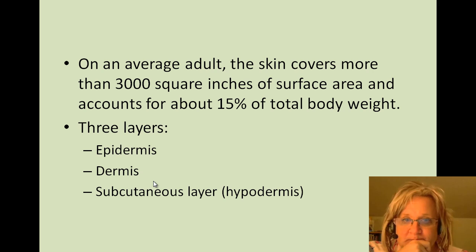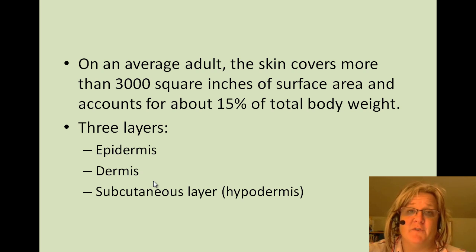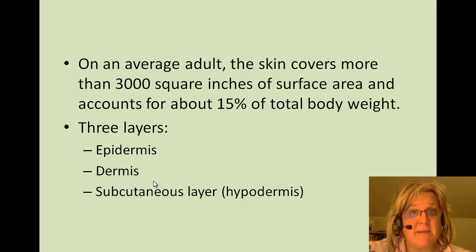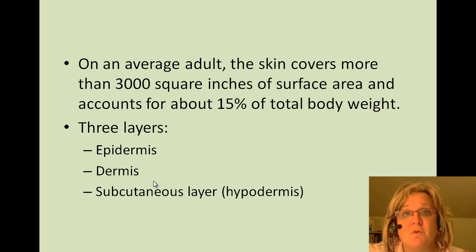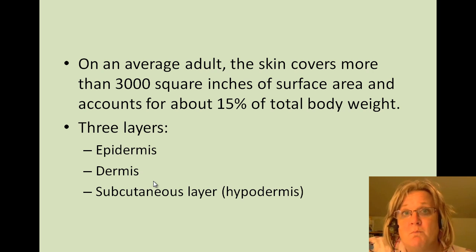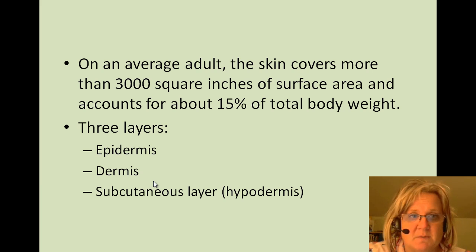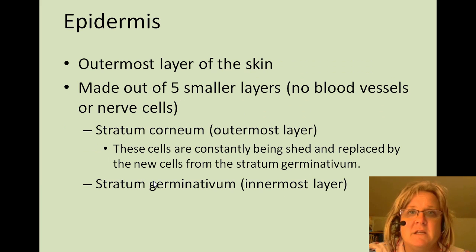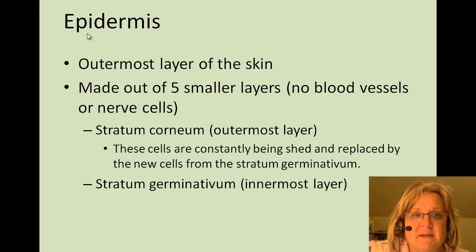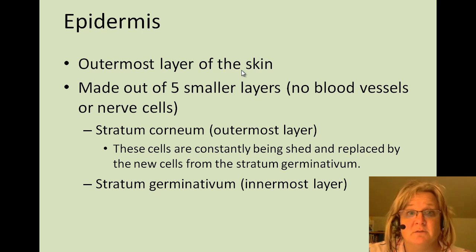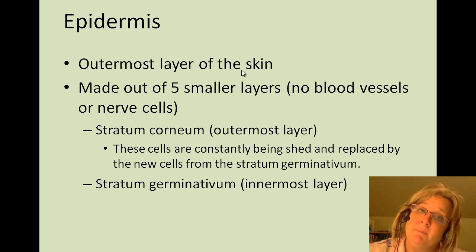On an average adult, the skin covers more than 3,000 square inches of surface area and it accounts for 15% of your total body weight. There are three layers: there's the epidermis, there's the dermis, and then there's the subcutaneous layer, or you can call it the hypodermis. In anatomy and physiology, there's often more than one term used to describe something. The epidermis — epi means above — is the outermost layer of the skin. It's what we're seeing on each other.